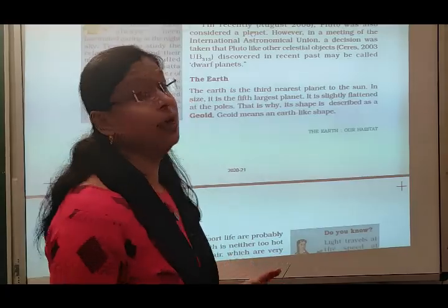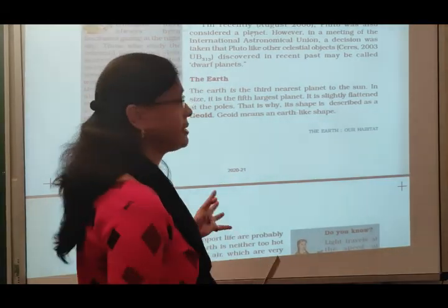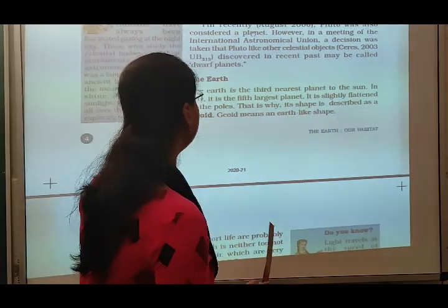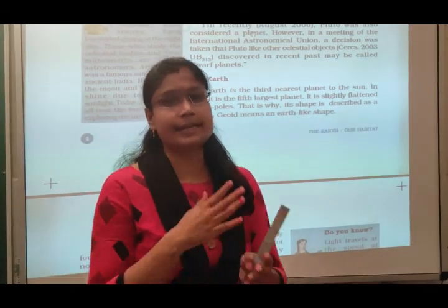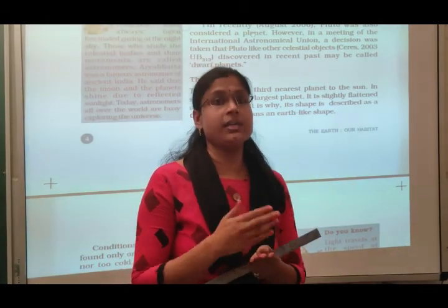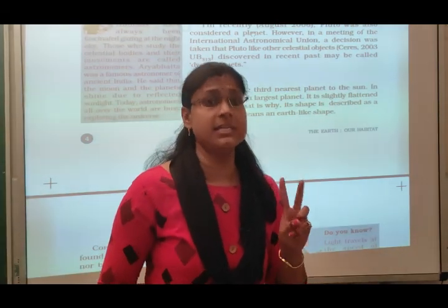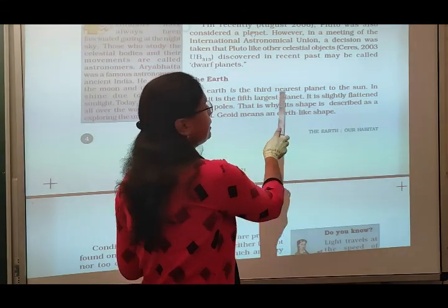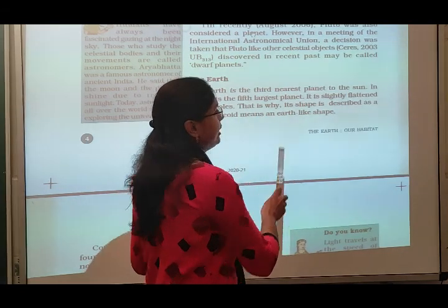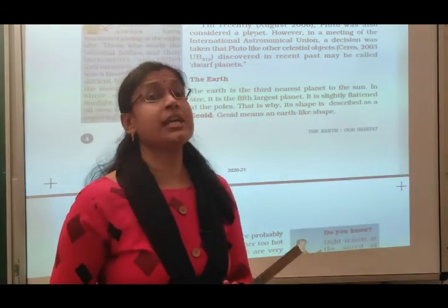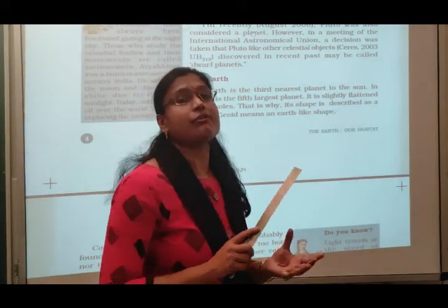In the previous video, we already learned about all the 8 planets. Now we are discussing about the earth, where we are living. The earth is the third nearest planet to the sun — first is Mercury, second is Venus, and third is Earth. In size, it is the fifth largest planet among all 8 planets.